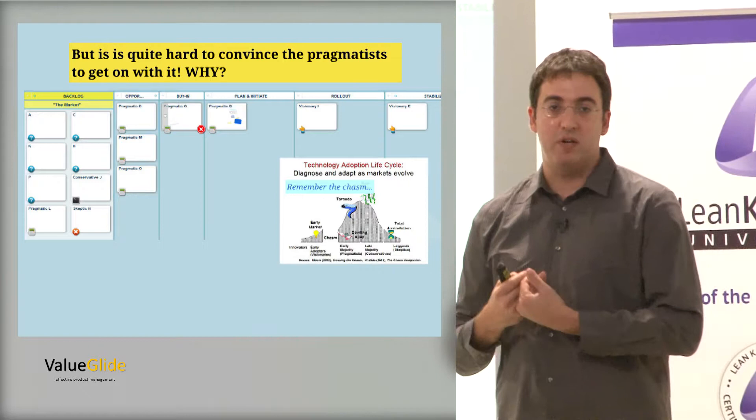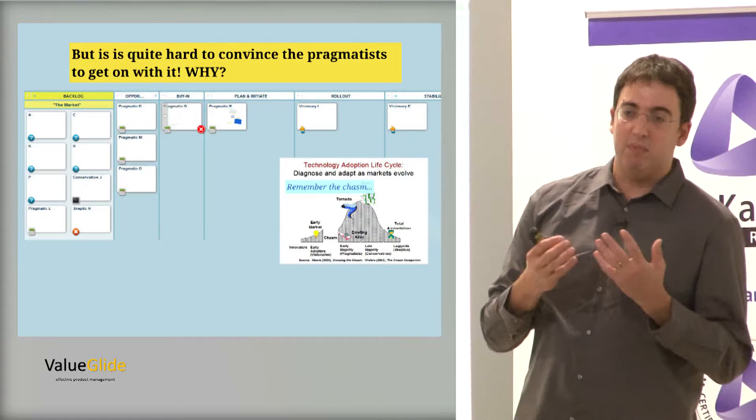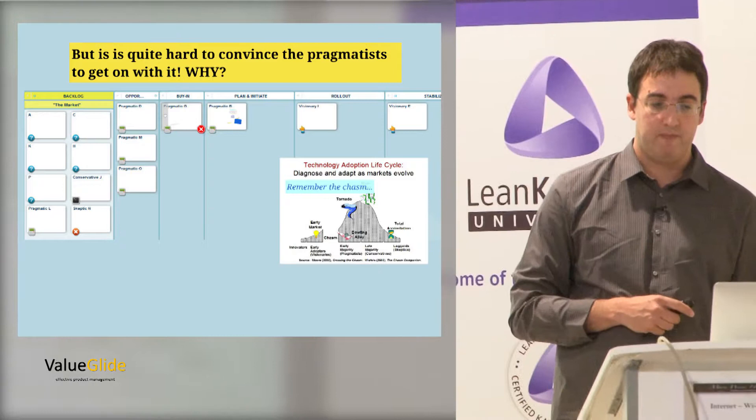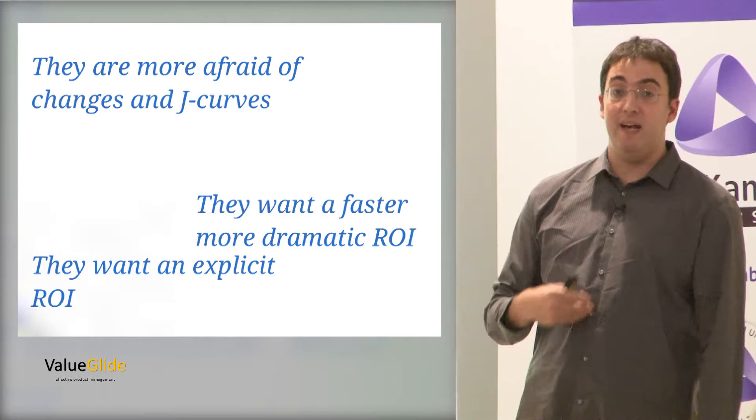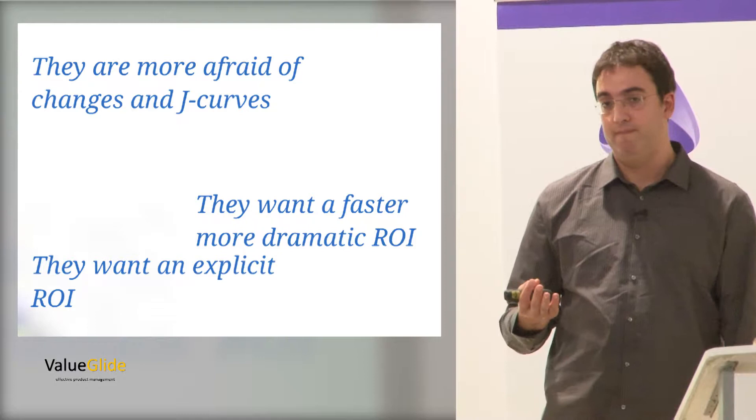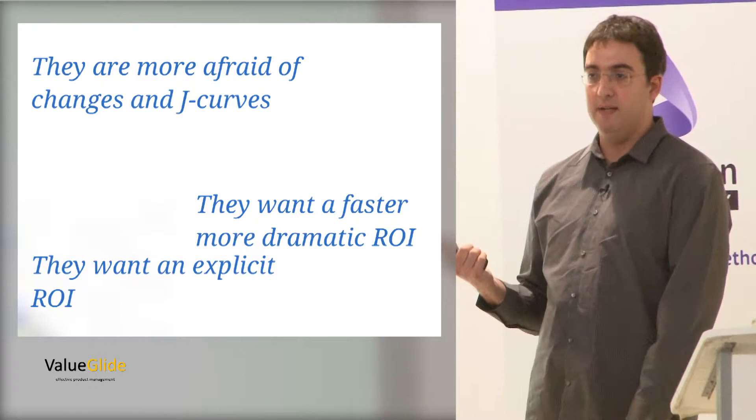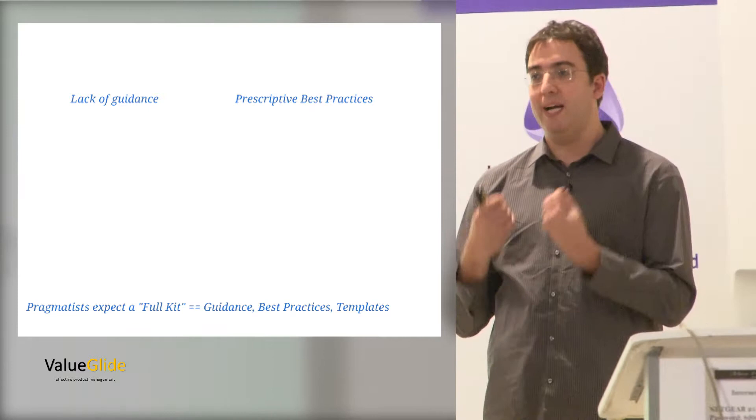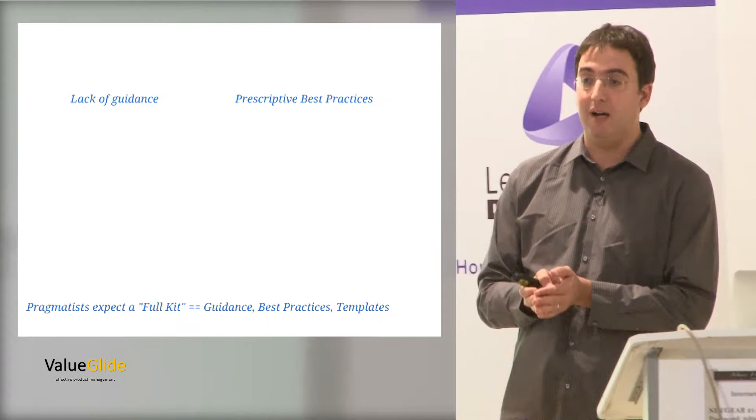But then you are in the chasm. The chasm is the place where the pragmatists start to show interest, but a lot of them are very, very scary of what is going on. They don't want to really do this. Basically what we are seeing is the fact that they are more afraid of change. If they see a business case to do something, it's not enough. They are afraid of change, they want a clearer, more dramatic ROI, and they want fuller solutions. They want a lot more guidance, a lot more clarity on what they need to do.